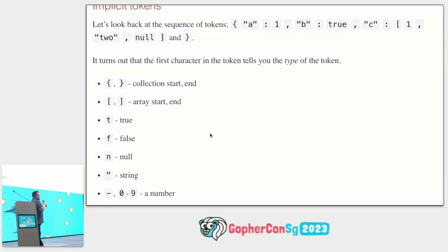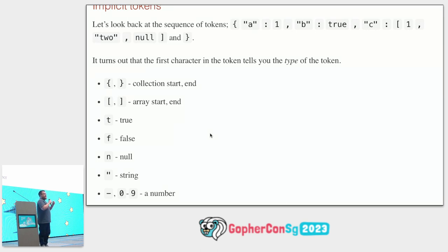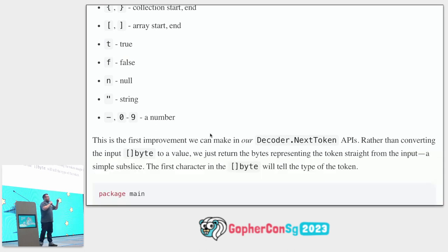Looking at the sequence of tokens, the first character in each token gives a hint as to its type: curlies and squares are collection start/end; 'T' never appears in JSON unless it starts the token 'true'; strings always start with a quote; same for false, null, and numerals. So rather than returning a typed interface like encoding/json, we can return a byte slice — a subslice of the input — and the first byte tells us the token type.